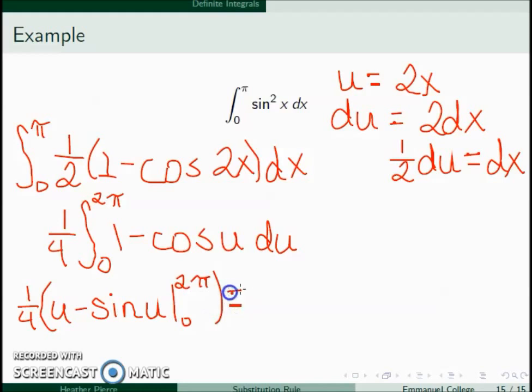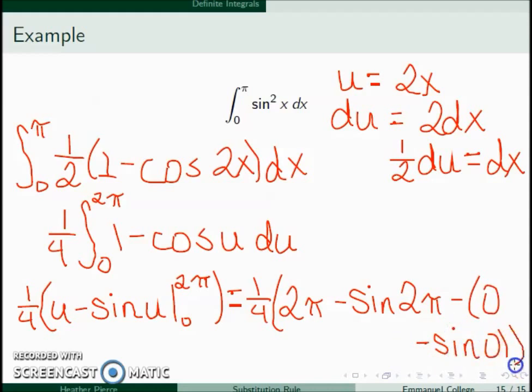So this is now 1 over 4 times 2 pi minus sine of 2 pi minus 0. And when you work this out you get a final answer of pi over 2.